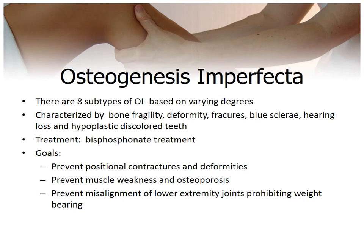Osteogenesis imperfecta is a rare disorder characterized by bone fragility — these are the kids whose bones are so brittle they fracture all the time. I included it because it is a possibility you could see it on boards. Overall, in the realm of pediatrics, it's pretty rare.